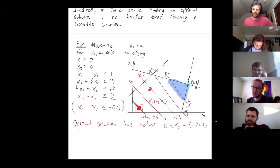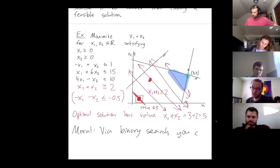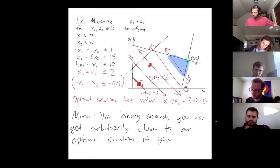You know, maybe I never quite get there exactly, but I get as close as I want. So the moral is that, via binary search, you can get arbitrarily close to an optimal solution if you can solve linear programs in the sense of finding whether a feasible solution exists or not.